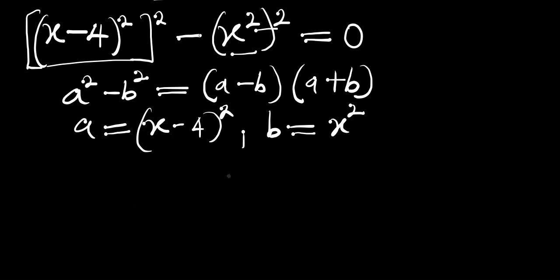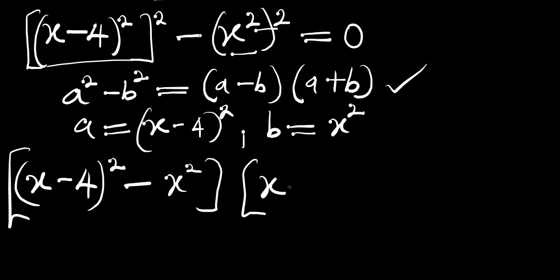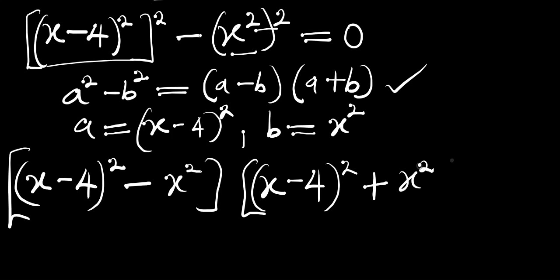So we proceed using this identity. For (a minus b), we have (x minus 4) squared minus x squared. Then times (a plus b), we write the same thing: (x minus 4) squared plus x squared, and this equals zero.